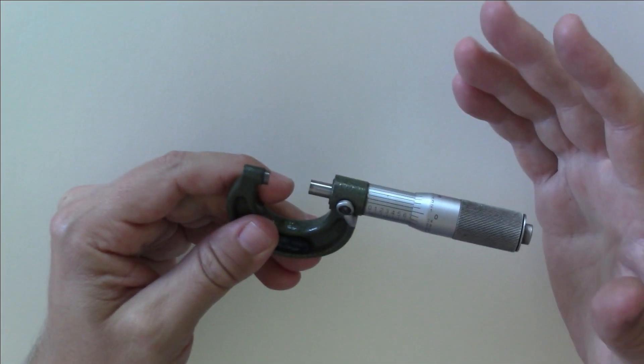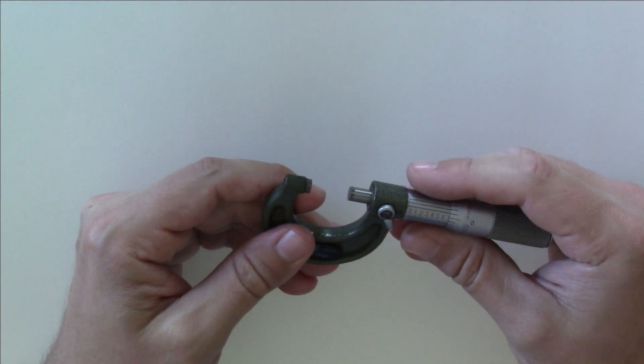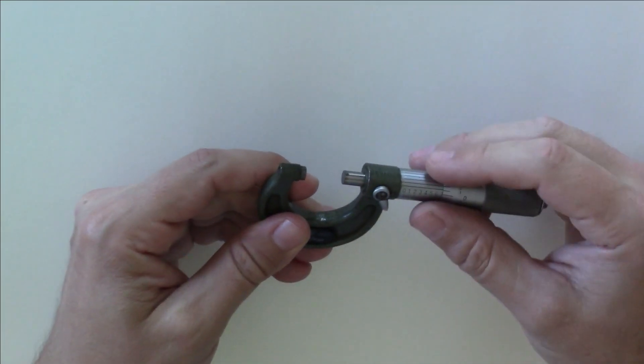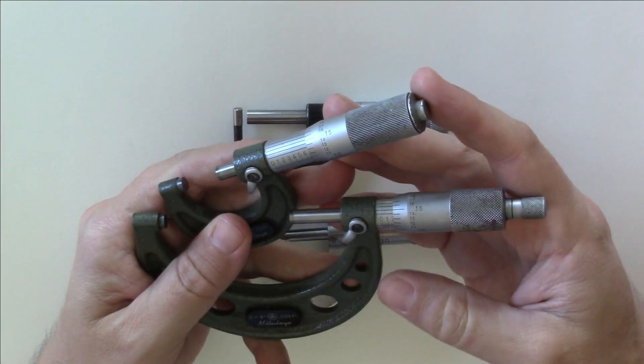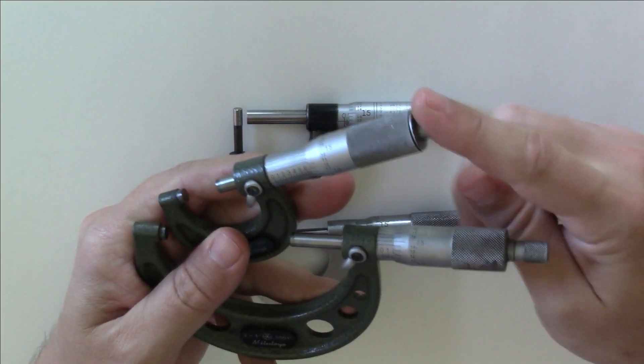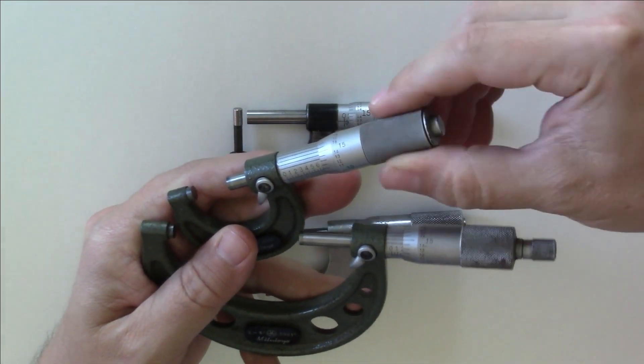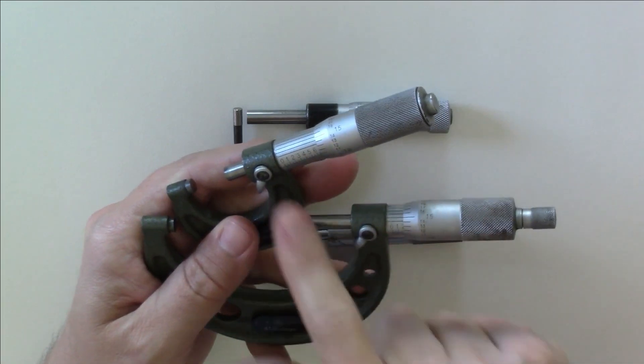Of course, if you have any questions or topics you'd like to see me cover in a video, let me know in the comments section and I'll see what I can do. To answer the question at hand, if you have a ratchet or a friction thimble on your micrometer, go until it either clicks or slips, which both of these are doing because I have them locked.